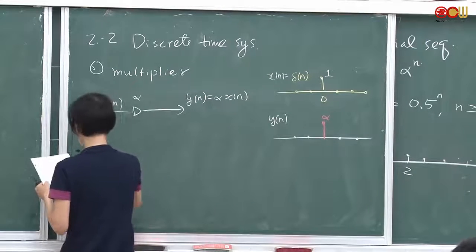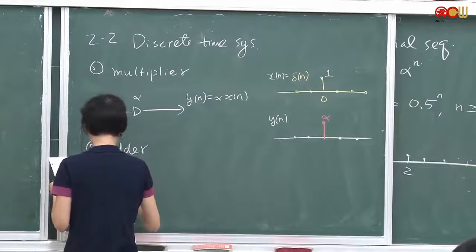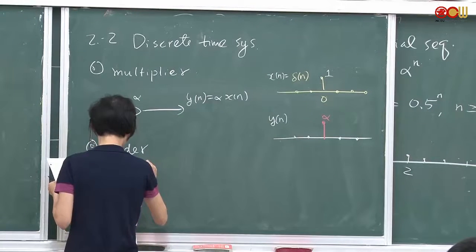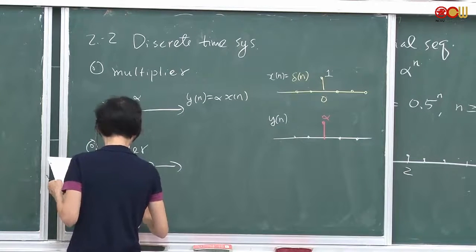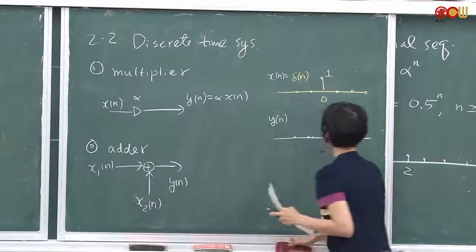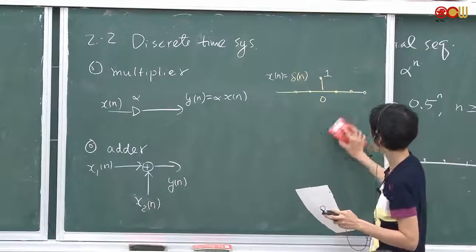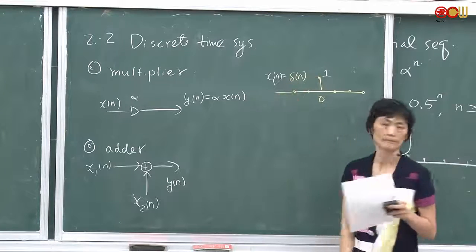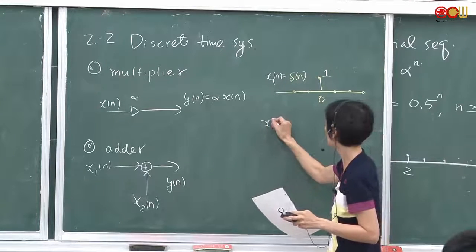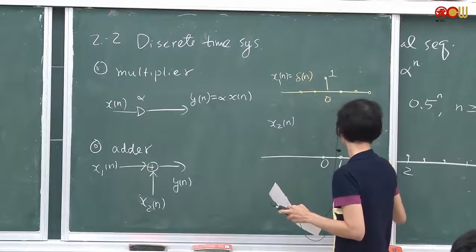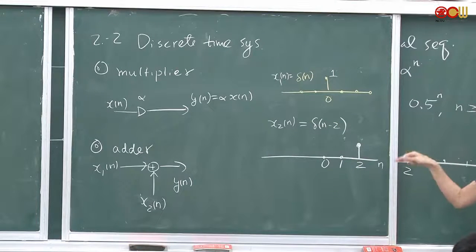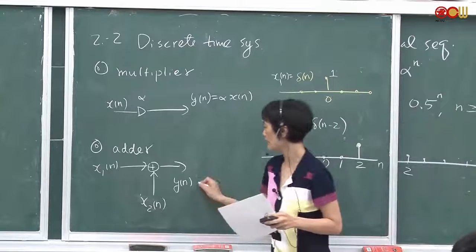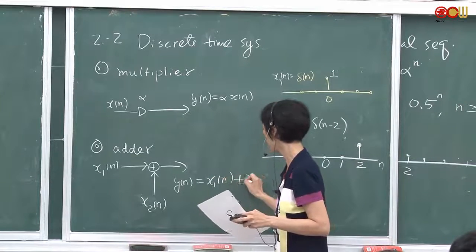And then how about an adder? We add two signals together. We have x1n and we have x2n, and the output is yn. Suppose x1n is one signal, and x2n is a delay — 0, 1, 2n — and this is delta(n minus 2). We add them together, adding samples by samples.